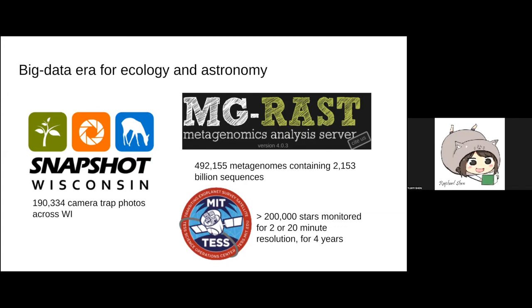The third data set is an astronomy data set I worked with, a space telescope called TESS, Transiting Exoplanet Survey Satellite. It basically takes photos of different stars and monitors their brightness to see if there is a planet that goes right before or right between a star and the Earth so that you can see there is a planet. 10 to the 6 stars monitored for 20 minute resolution for 4 years. All of this tells us that both ecology and astronomy are in a really big data era.